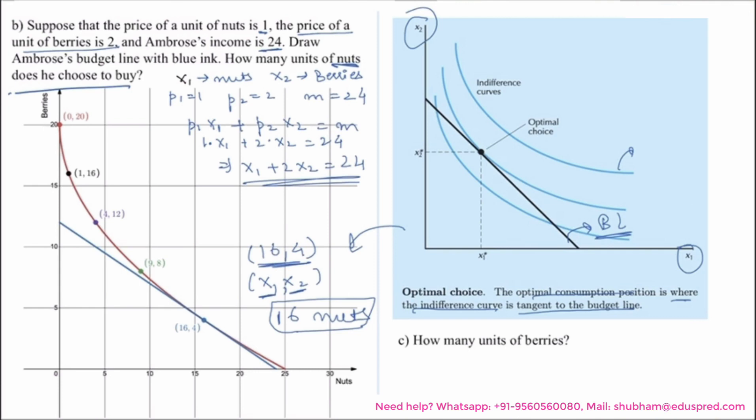Now let's move on to the next part which says how many units of berries will he choose to consume? By the same logic, we have found the optimal consumption bundle which was 16, 4, and your consumption bundle was of the form X1, X2 where X1 is the units of nuts and X2 is the units of berries.